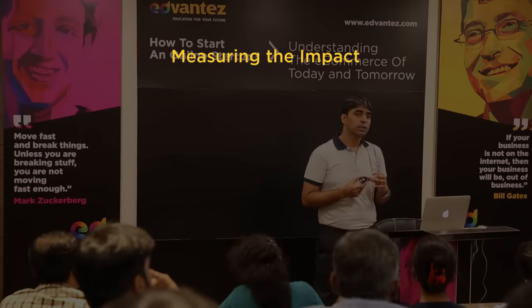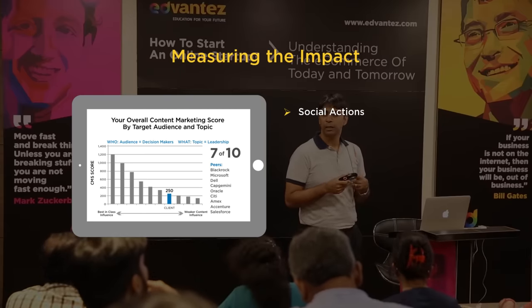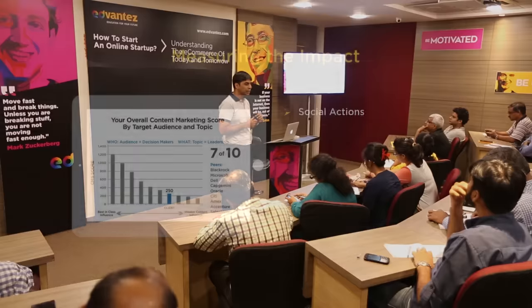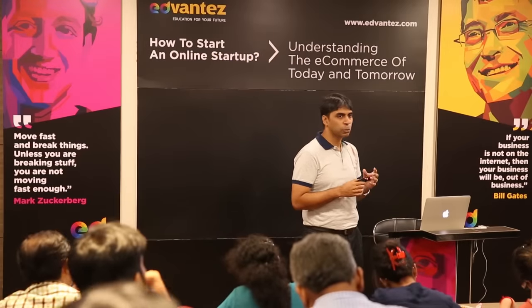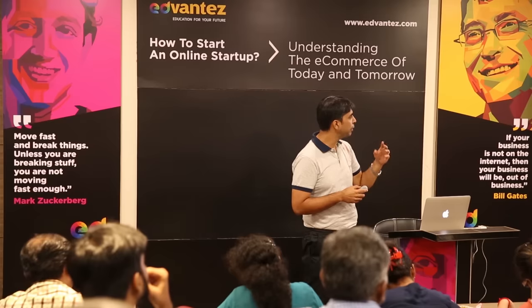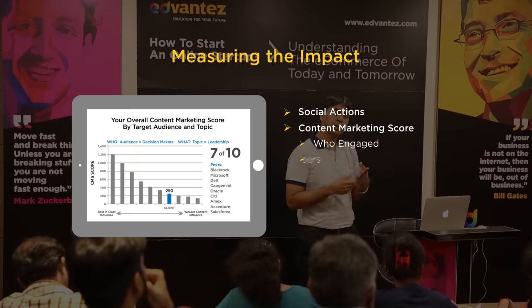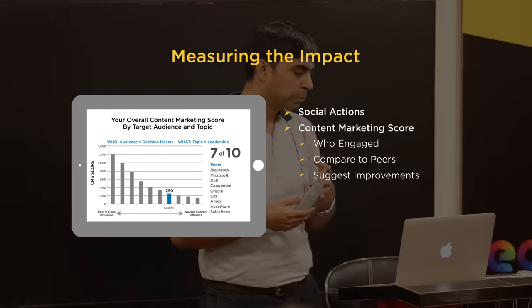How do you measure the impact on LinkedIn? First, social actions — people liking, sharing, and viewing your content. LinkedIn also has a concept called a content marketing score. On the right-hand side is an example — one gets 7 out of 10. It looks at who's engaged with you, compares you to peers, and suggests improvements. That score determines how well you're doing.